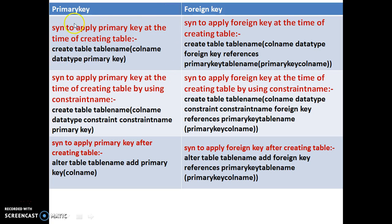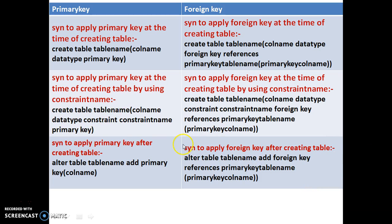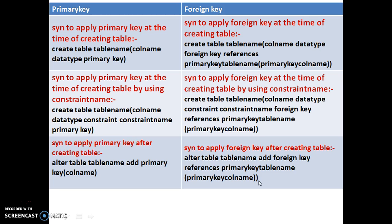The syntax for creating a primary key: CREATE TABLE table_name (column_name data_type PRIMARY KEY). For a foreign key: CREATE TABLE table_name (column_name data_type FOREIGN KEY REFERENCES primary_key_table_name(primary_key_column_name)). To apply primary key with a constraint name: CREATE TABLE table_name (column_name data_type CONSTRAINT constraint_name PRIMARY KEY). For foreign key with constraint name: CONSTRAINT constraint_name FOREIGN KEY REFERENCES primary_key_table_name(primary_key_column_name). To apply after table creation: ALTER TABLE table_name ADD PRIMARY KEY (column_name); and ALTER TABLE table_name ADD FOREIGN KEY REFERENCES primary_key_table_name(primary_key_column_name). This is how you work with foreign key constraints.